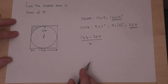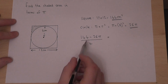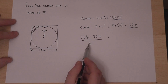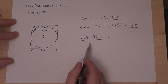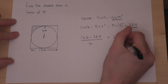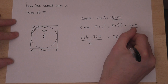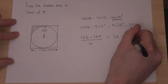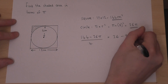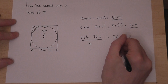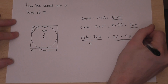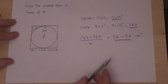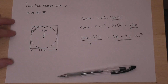This can be simplified, because I can divide both numbers by 4. If I divide 144 by 4 I get 36, and if I divide 36 by 4 I get 9. So 36 take away 9 pi is the area of that shaded corner, and the units of course are cm².